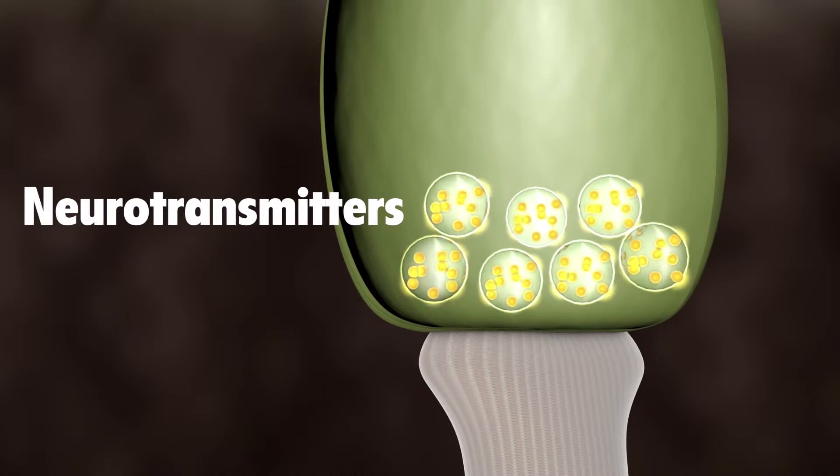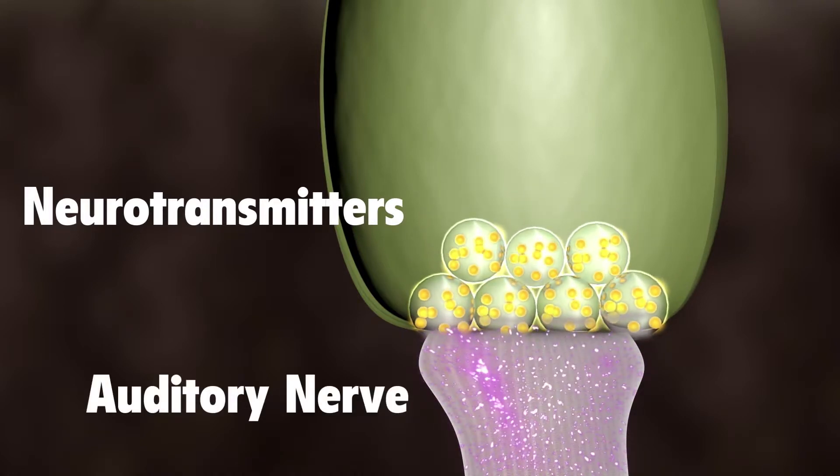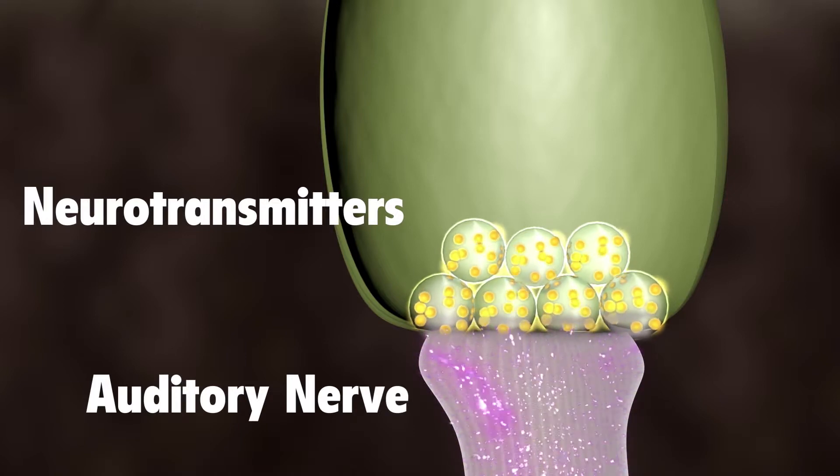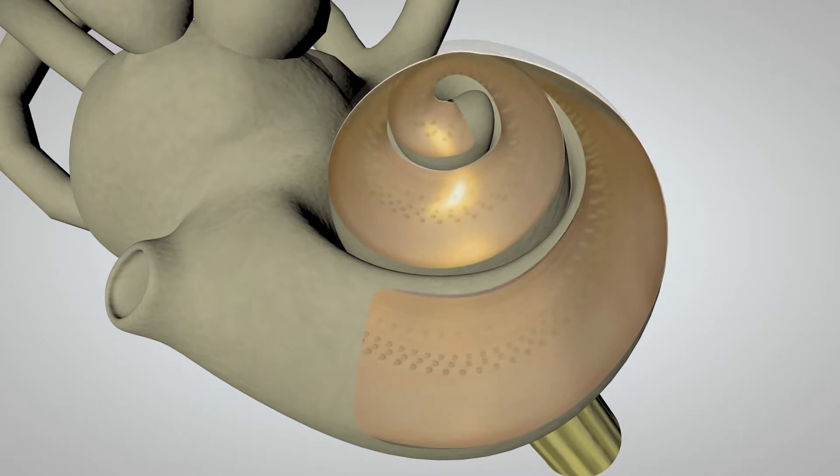The chemicals bind to the auditory nerve cells and create an electrical signal, which travels along the auditory nerve to the brain. Different hair cells respond to different frequencies of sound.